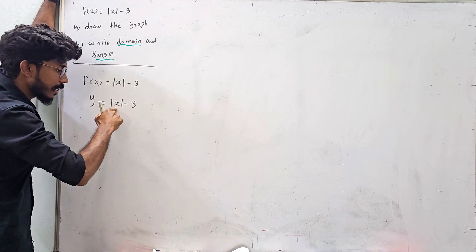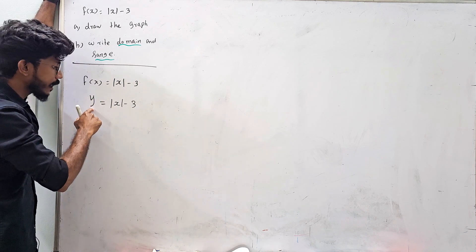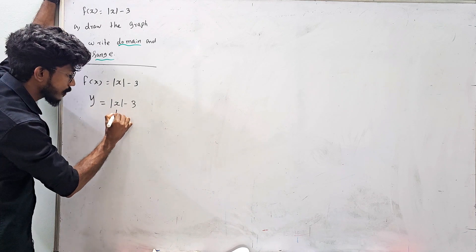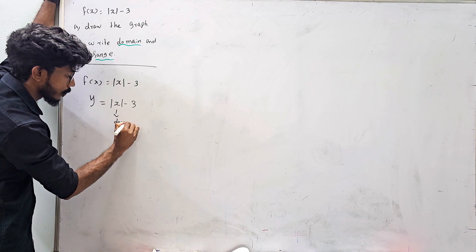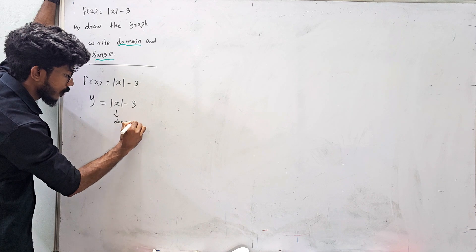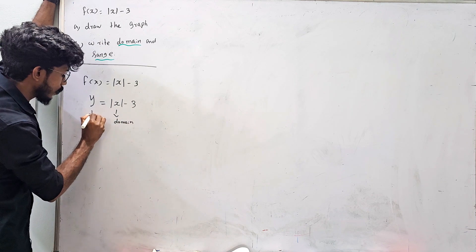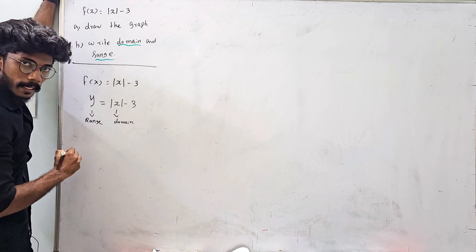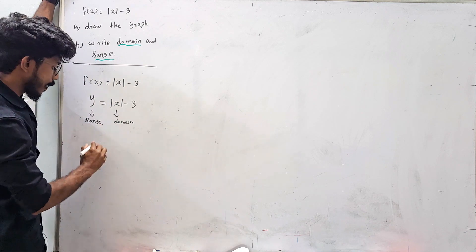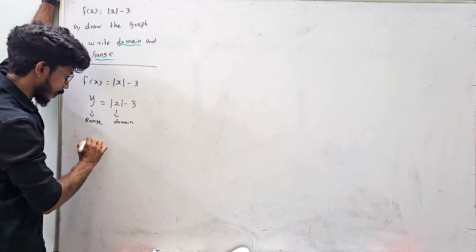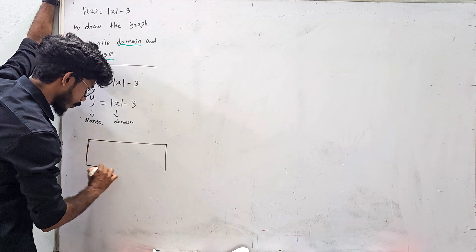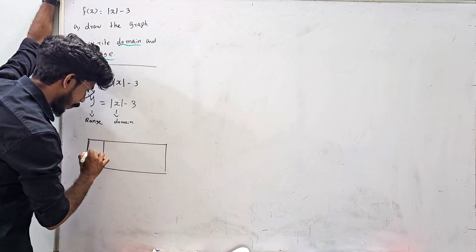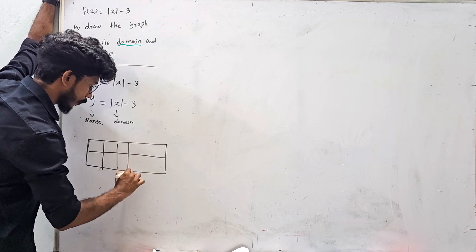If you take the domain and range from y, that's the value of x. Now you can find the domain and the value of y. Let's take a table — let's take 5 values so you can get a graph.